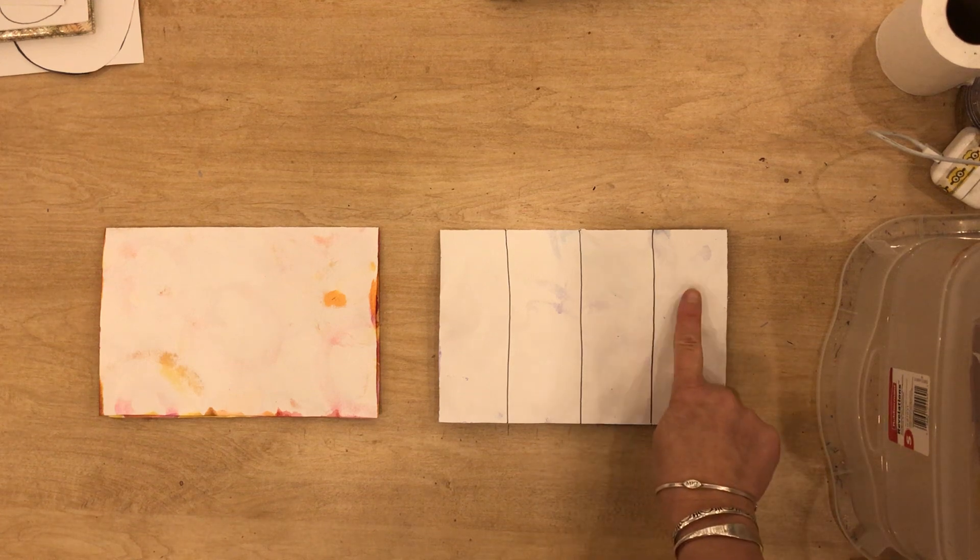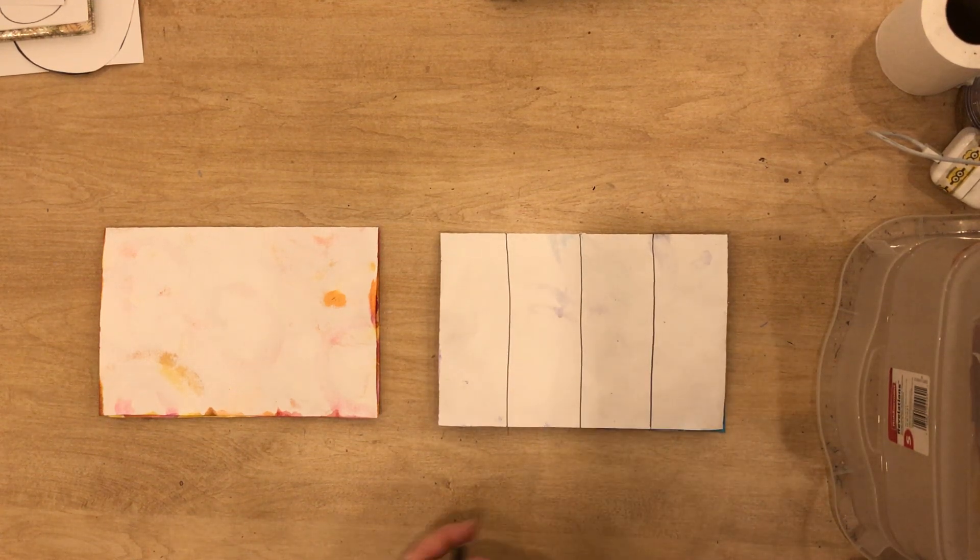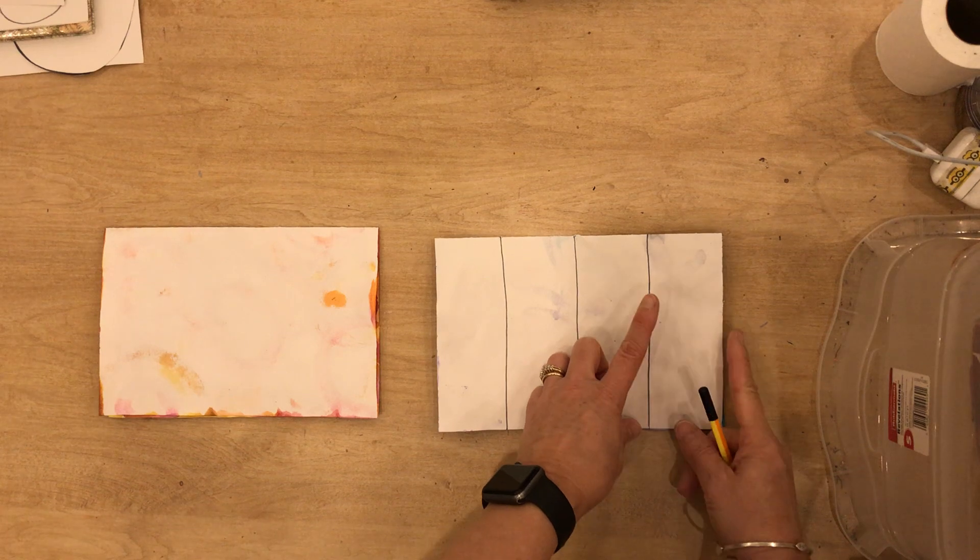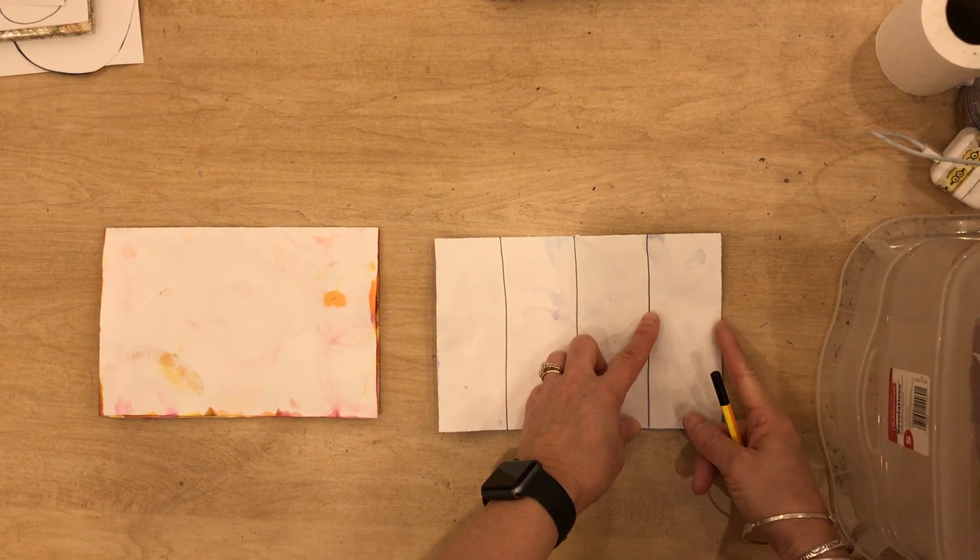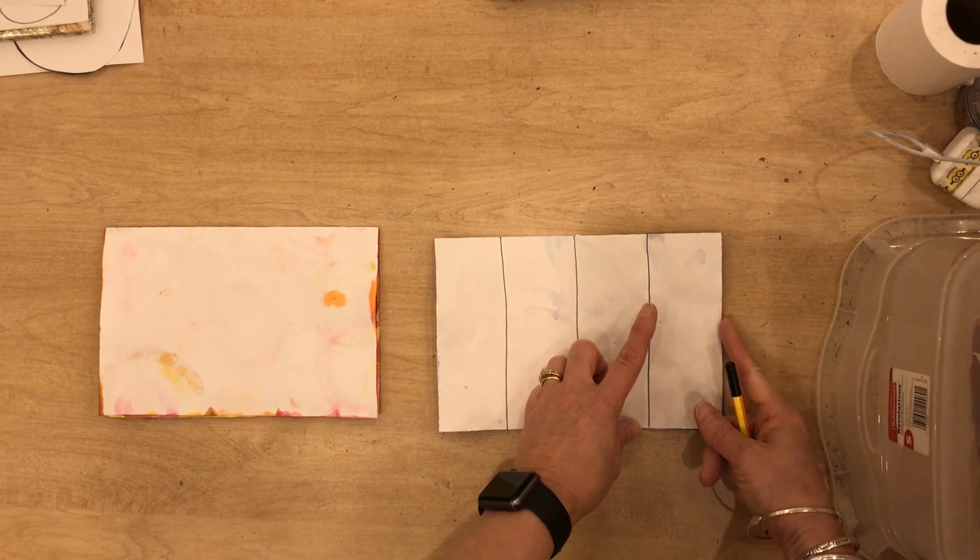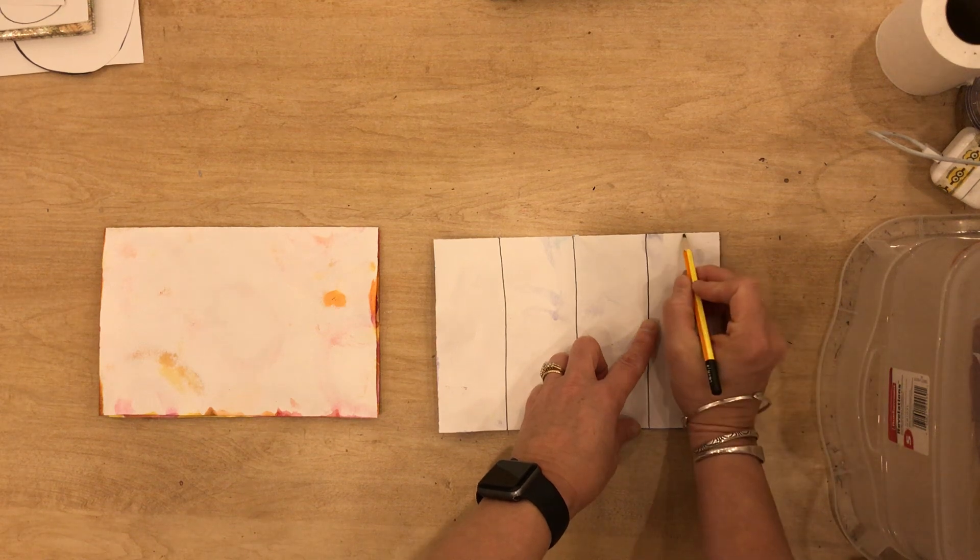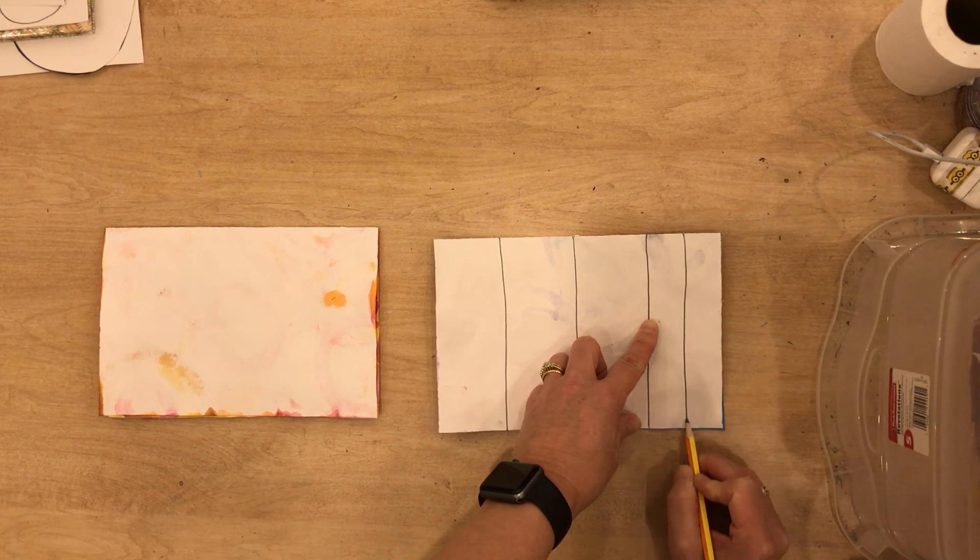We are going to divide each one of these one more time. So let's start with this one. I'm going to find the middle between the edge of the paper and this line here and I'm going to draw a line coming down.